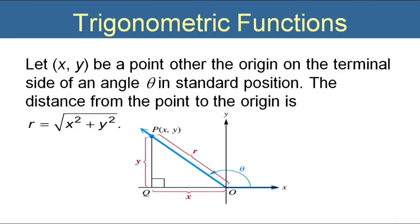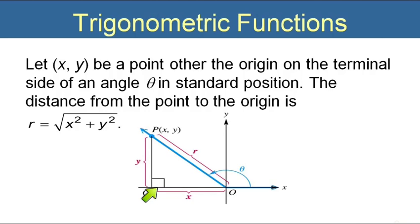Now we're about to define the six trigonometric functions. Before we do that, we need to figure out how we can know r. They've plotted a point x comma y and drew a ray from the origin to that point. The horizontal side of this triangle is x, the vertical side is y, and you recognize this as a right triangle. So r equals the square root of x squared plus y squared — that's the Pythagorean theorem already solved for the hypotenuse. Now that we know how to find r when given x and y, let's define the six trig functions.